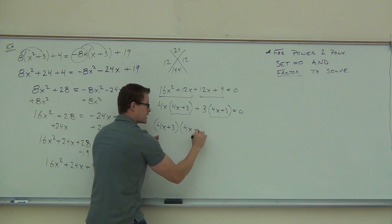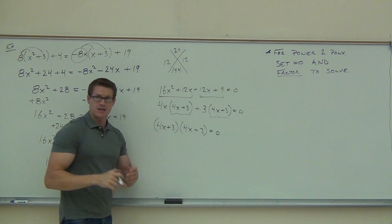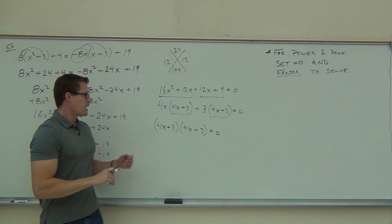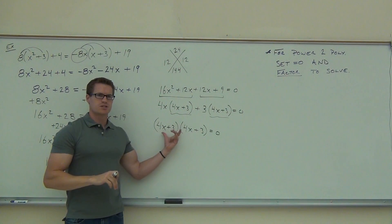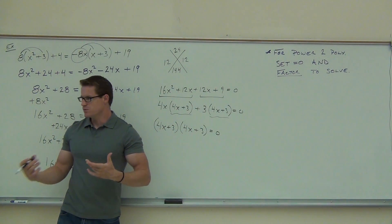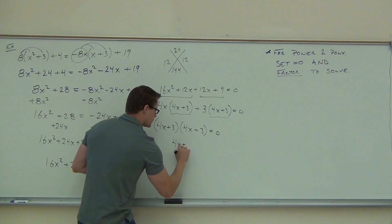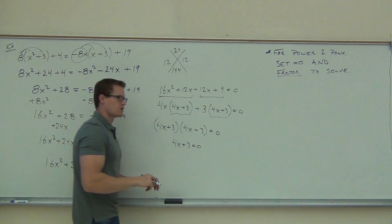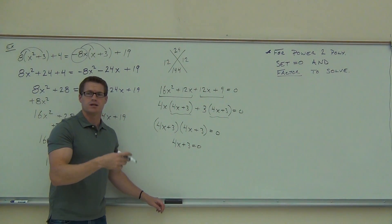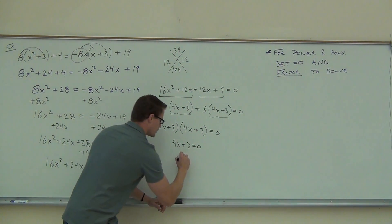And what we're left with is the same factor. We actually could write it as (4x + 3)². If you want to do that, you can do that. And then we're going to set each of these equal to zero. However, there's only one unique factor. So we're going to set that one equal to zero. We'll have our 4x + 3 equals zero. If we solve that down, what are we going to end up getting? Perfect.